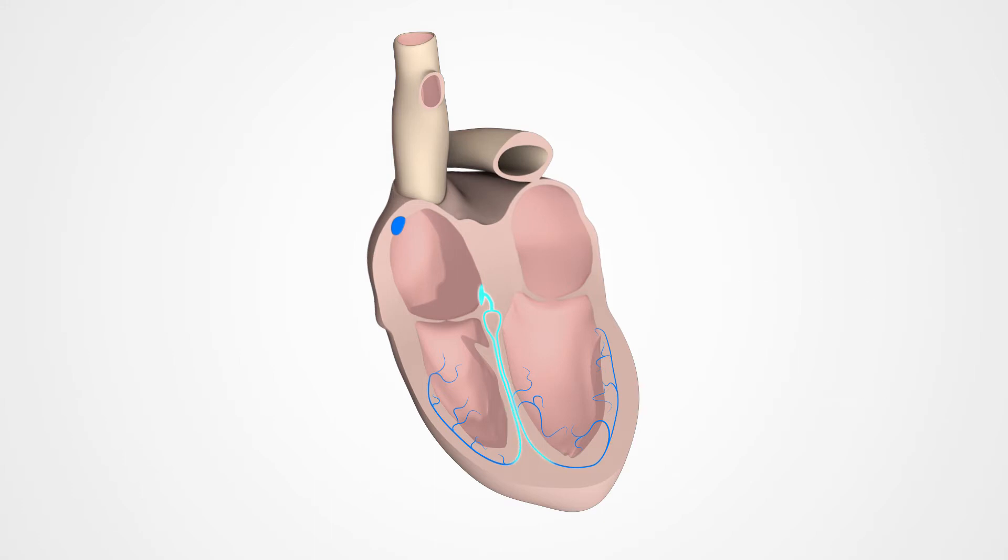From there, the signal travels down to the fine fibers that enter the muscles of the ventricles, which then contract and pump blood out of the heart.